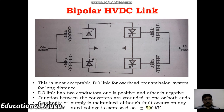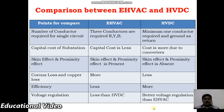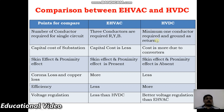For example, here we have plus or minus 500 kV. Comparing EHVAC and HVDC: the number of conductors required for a single circuit in EHVAC is three, while HVDC requires a minimum of one conductor with the ground acting as the return conductor. The capital cost of an EHVAC substation is less, while the cost of an HVDC substation is more.